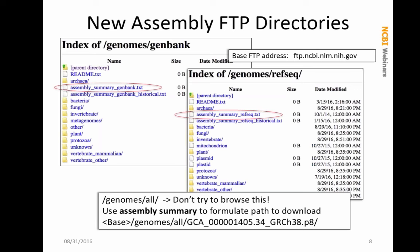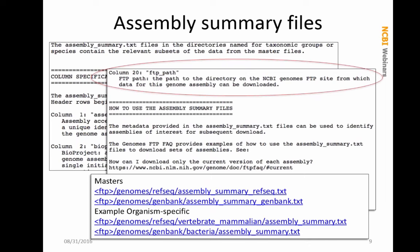In the FTP directories, the genomes_genbank directory is on the left and genomes_refseq is on the right. You can see the organization by groups of organisms. Within those there are assembly_summary text files — these are the files where you would go to get the paths to download data, and you can see examples on the Genome Downloads FAQ. Today I am going to show you how to get those paths using eDirect. One of the most useful things in the assembly summary file is column 20 in that tab-delimited file, which is your FTP path.